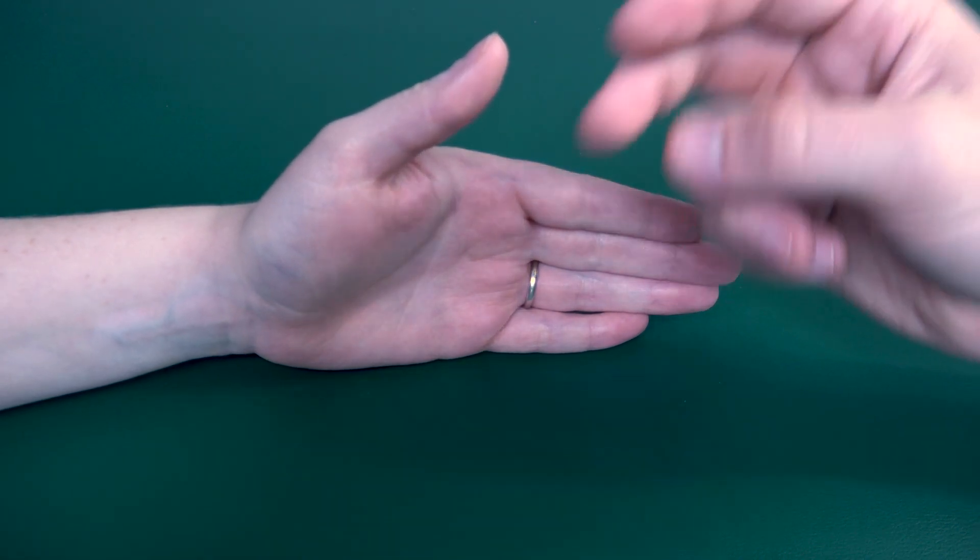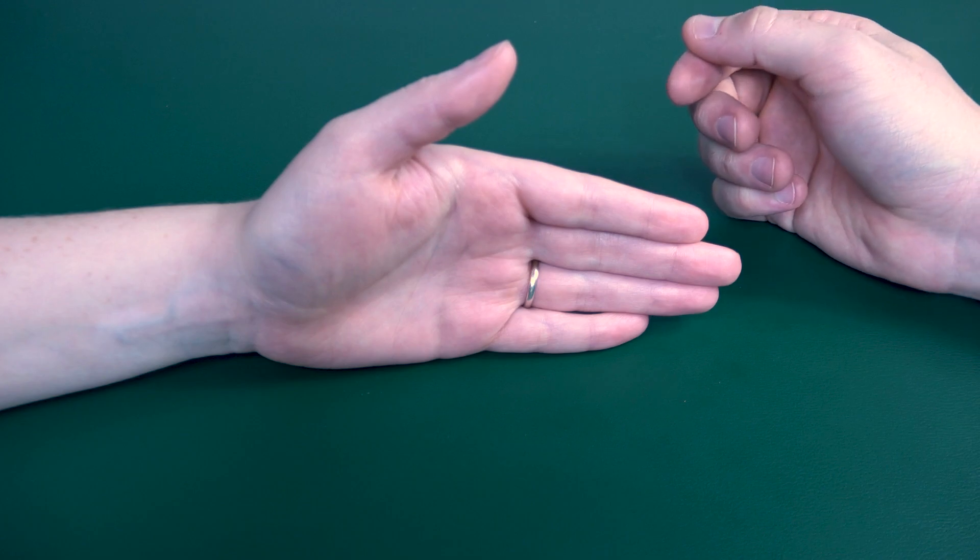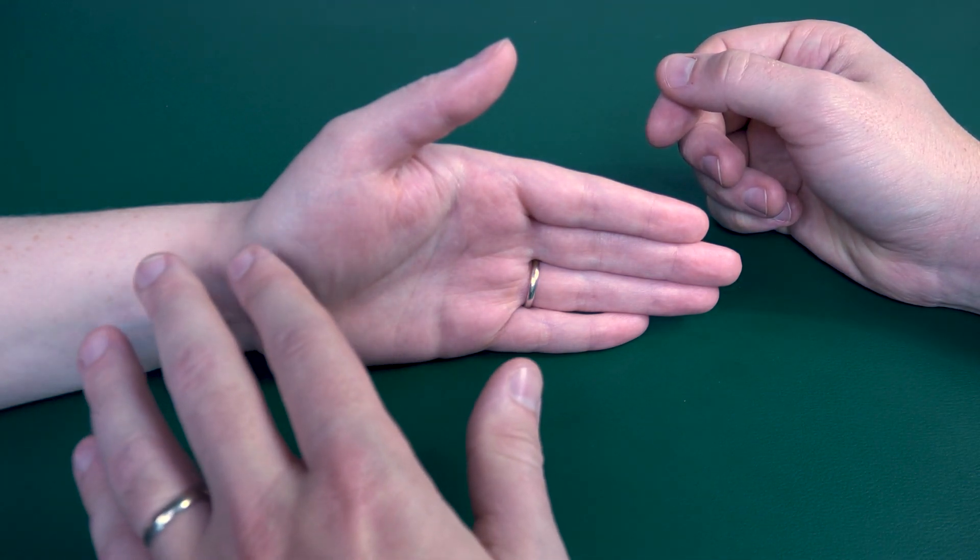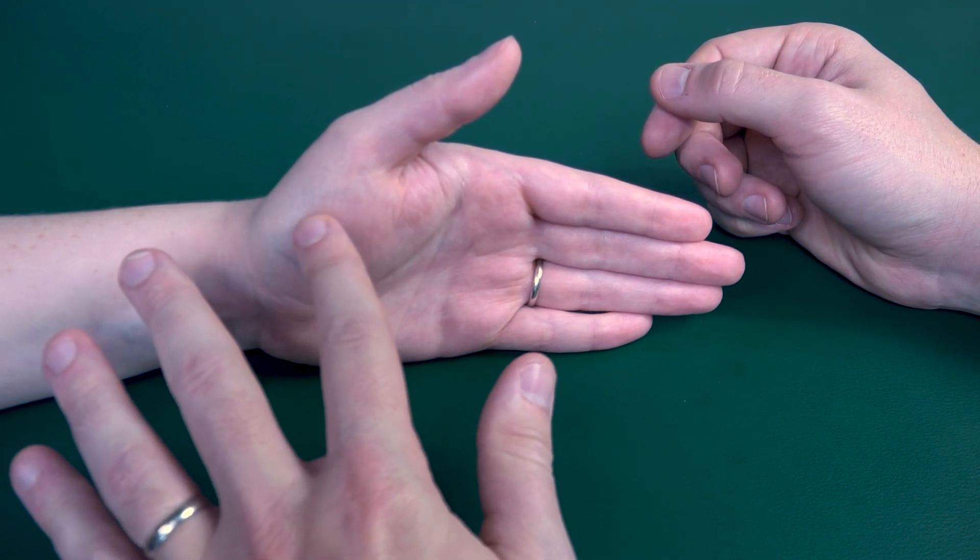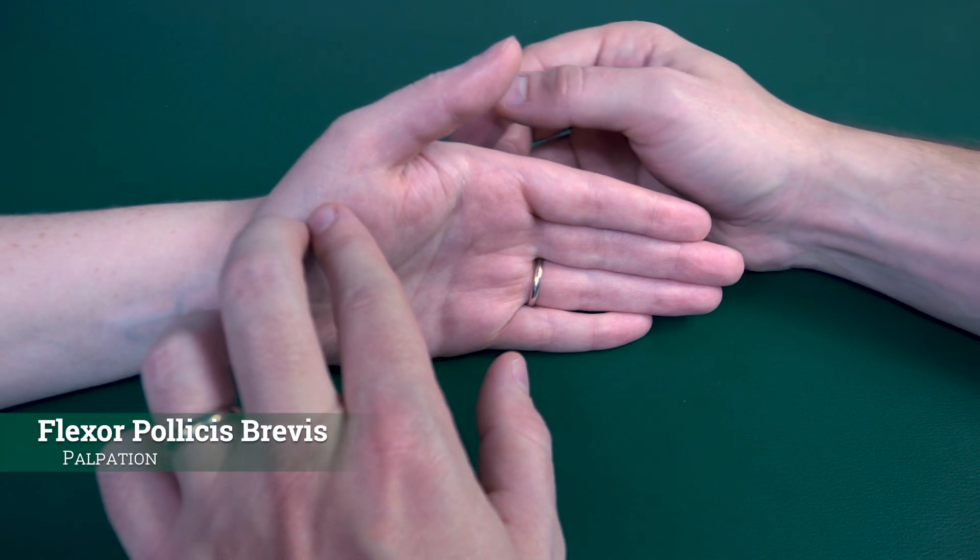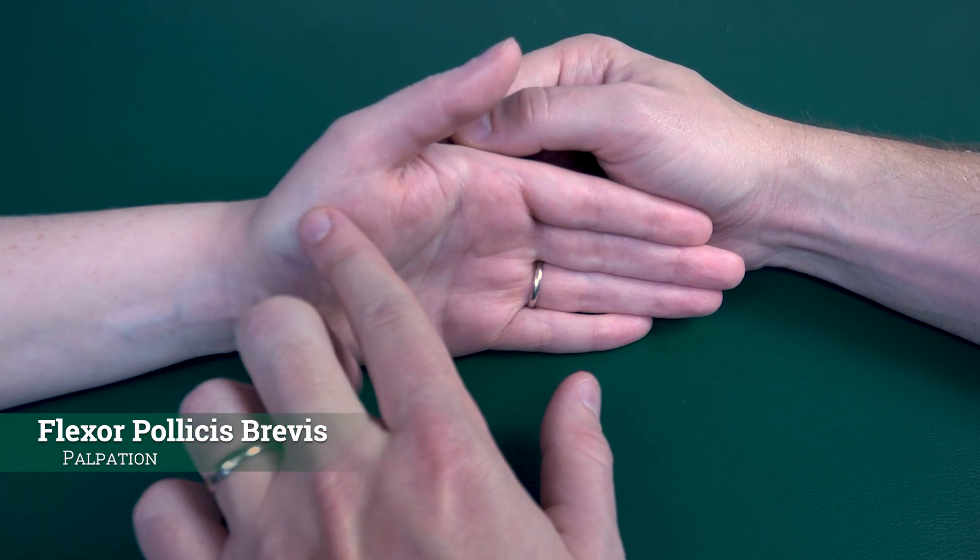Because she's able to do that, that would be a grade two. If she could not do that, or if there was minimal motion going on, then I would palpate the flexor pollicis brevis, which is found about right here.